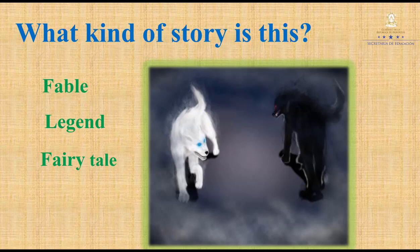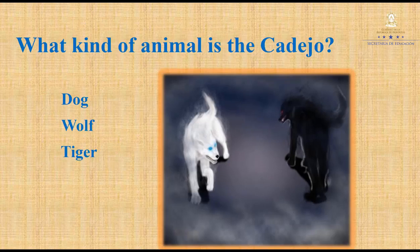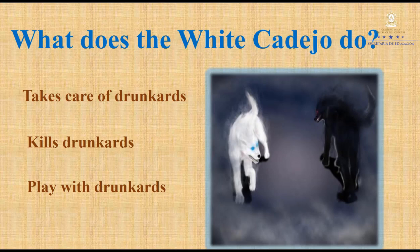Now, let's answer some questions about this story. First, what kind of story is this — fable, legend, or fairy tale? Excellent, it is a legend. What kind of animal is the Kadeo — dog, wolf, or tiger? Very good, it is a dog. What does the white Kadeo do — takes care of drunkards, kills drunkards, or plays with drunkards? Excellent, the white Kadeo takes care of drunkards.